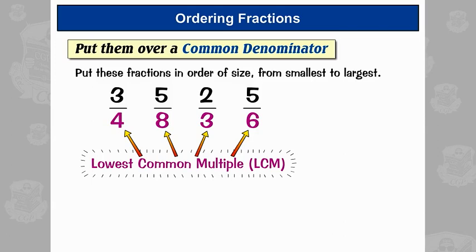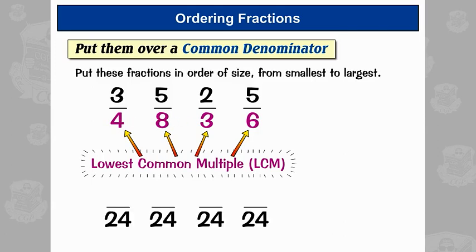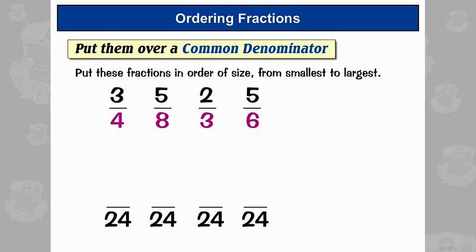We've got a video on multiples if you want to look at that, but basically the lowest common multiple is the lowest number that all of these numbers will go into. In this case it's 24, since 24 is in the times tables of all these numbers. So we need to convert these fractions into twenty-fourths.